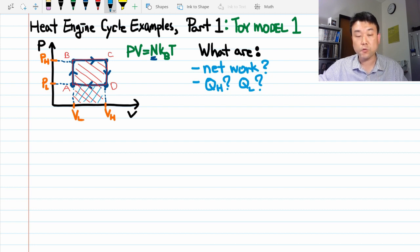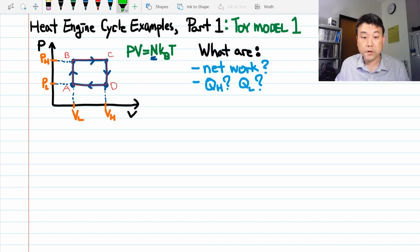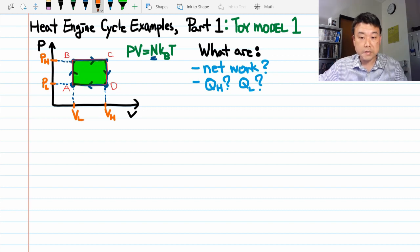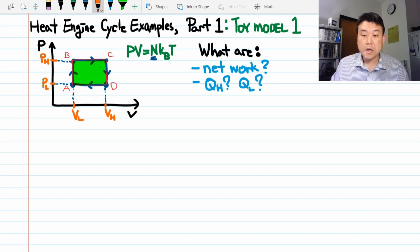So the negative work with magnitude equal to the area under the curve is done. So when you calculate the network done over a cycle, it's the area enclosed by the loop, or this area in green here. So it seems like network calculation won't be that difficult. Some of you probably have an answer right now already.